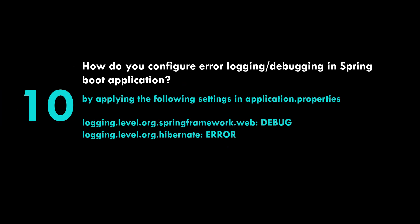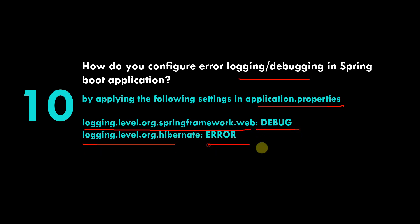The last question for this video: how do you configure error logging and debugging in a Spring Boot application? You can go to the application.properties file and set properties like 'logging.level.org.springframework=DEBUG' or 'logging.level.org.hibernate=ERROR'. You can set any logging level. If you have knowledge of logging frameworks like Log4j, you can relate to this. That covers many questions across these two videos — see you in the next one!